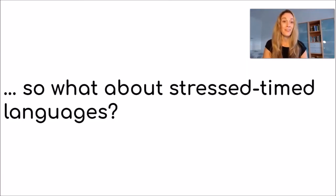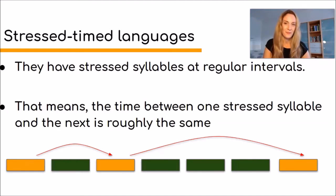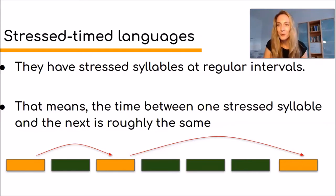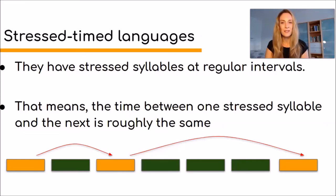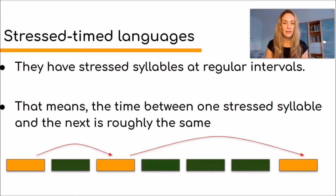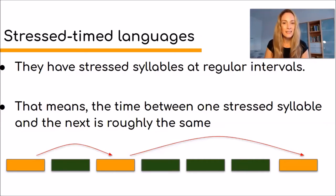Now let's look at stress-timed languages. How do they work and what makes them different? In stress-timed languages, stressed syllables occur at regular intervals — meaning the time between one stressed syllable and the next is roughly the same. Looking at the diagram, we have a sentence with seven syllables, three of which are stressed: the first, the third, and the last. The time between the first and third stressed syllable has to be the same as between the third and the last, even though there are more syllables in between.